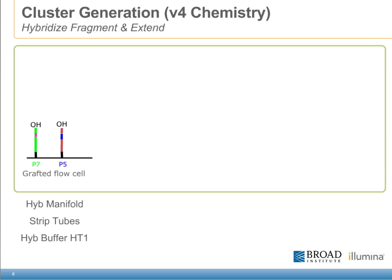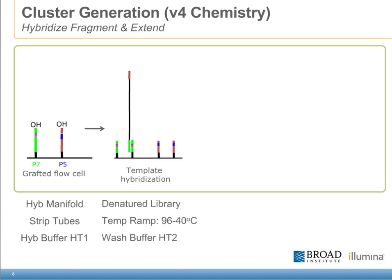We start off with the paired-end flow cell. The surface of the flow cell shows the P7 and P5 surface-bound oligos. We need the Illumina hide manifold, which allows us to take material from strip tubes and transfer it into the flow cell. The strip tubes contain our samples of interest, some buffers, and our hide buffer — a basic salt storage buffer we'll use to prime the flow cell for the addition of residual reagents.